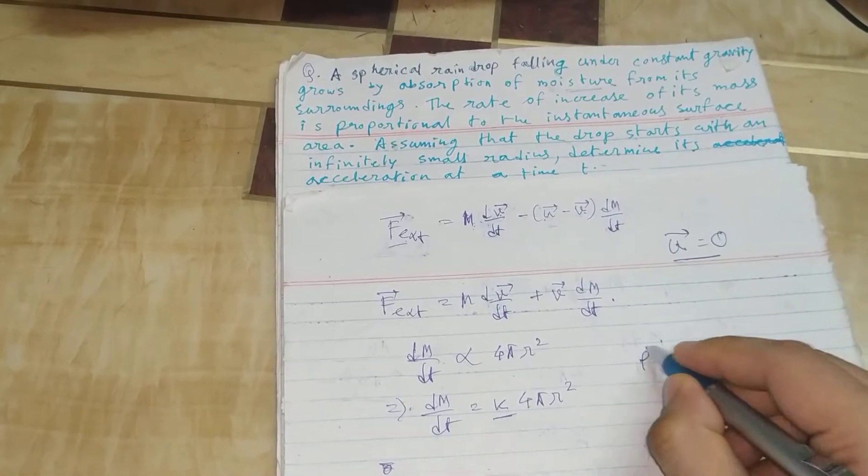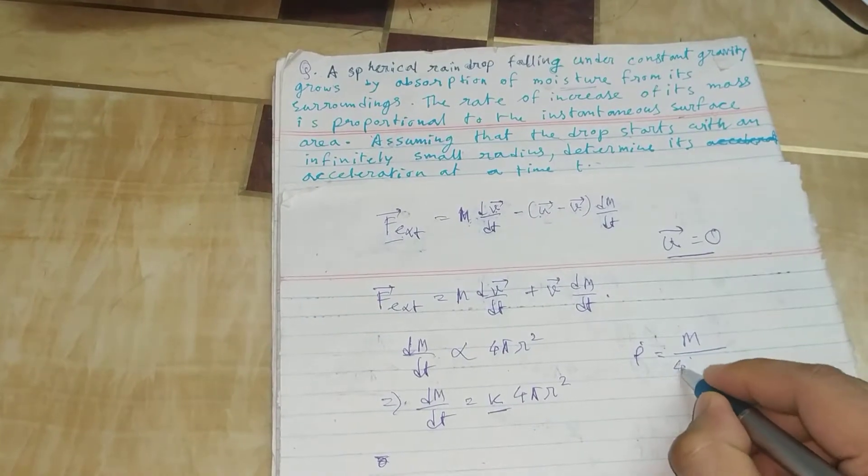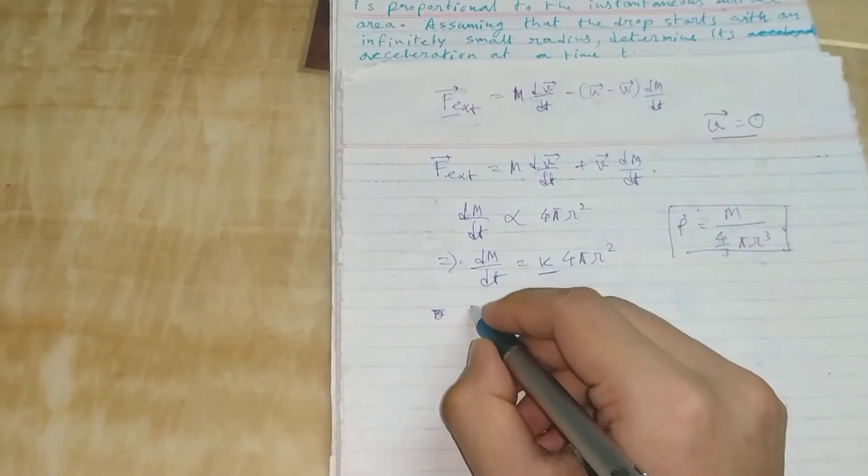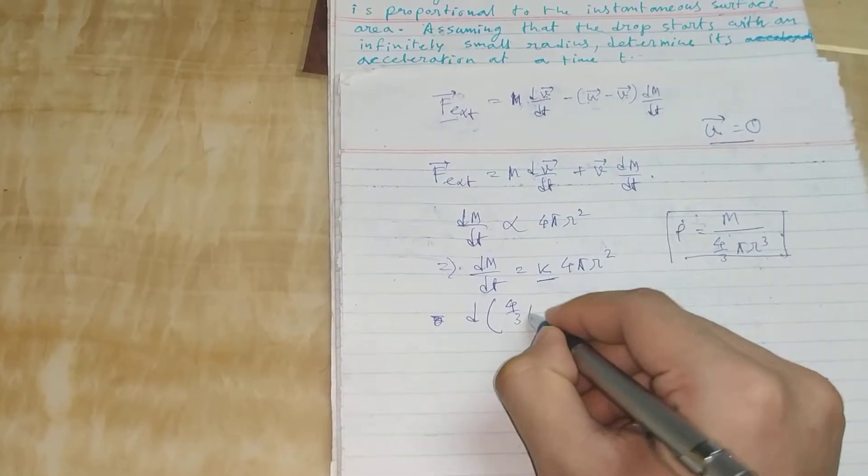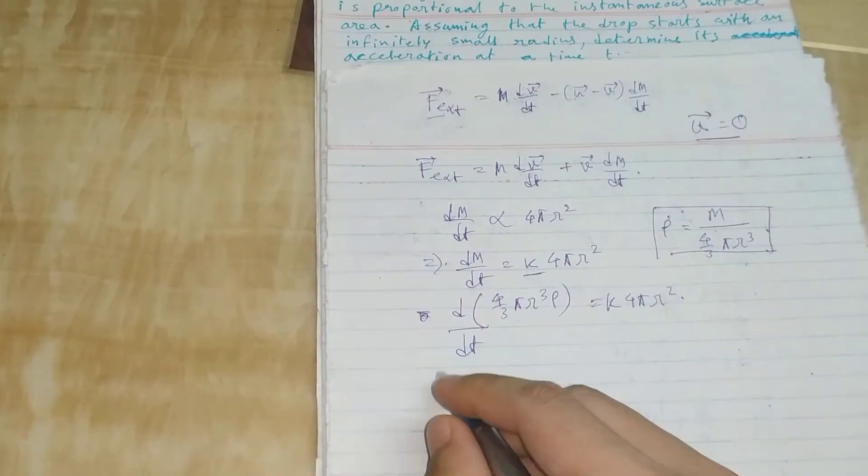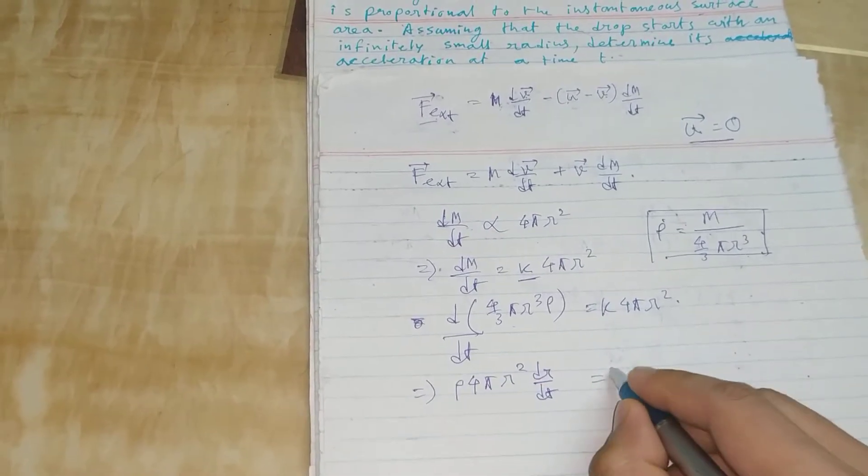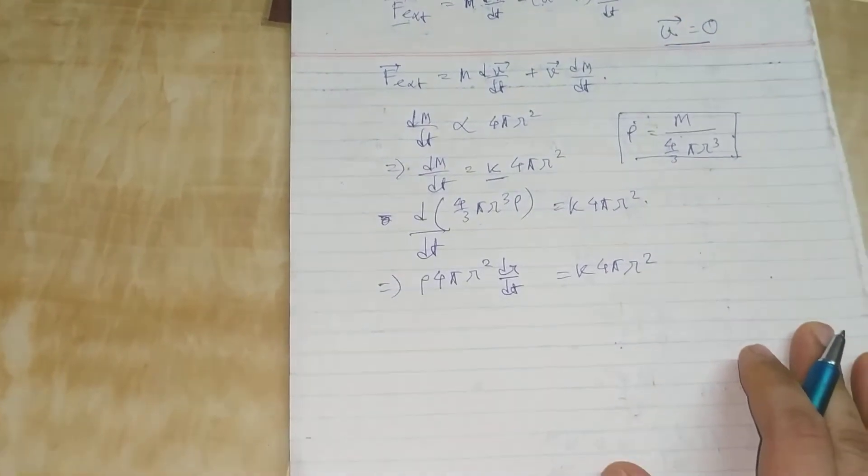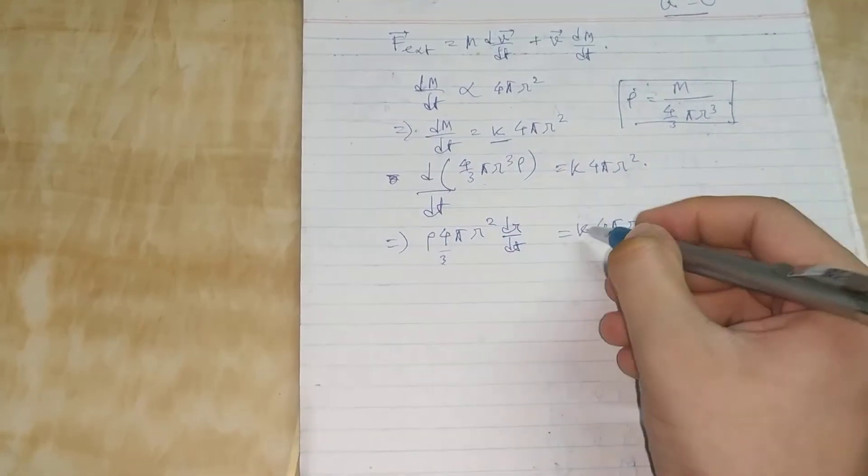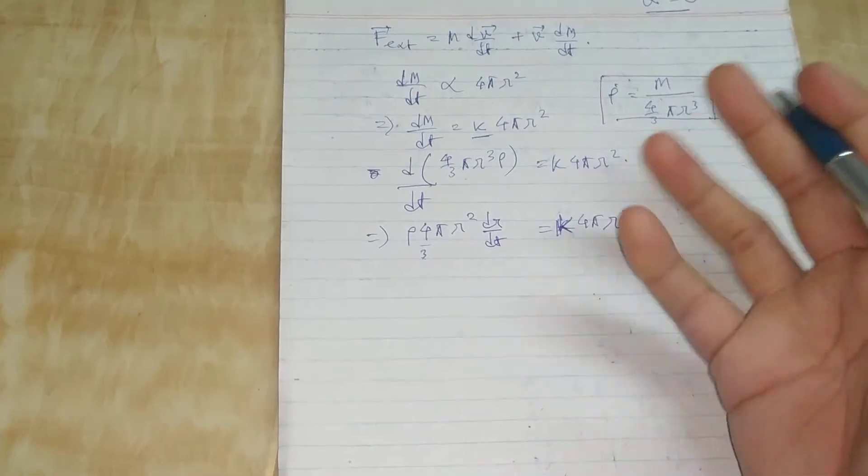If ρ is the density of the raindrop, which is mass divided by volume, we can write from this relation that ρ = m/(4πR³/3). From this we can manipulate to get dm/dt = K × 3ρ × 4πR² × dR/dt, which simplifies to dm/dt = KR dR/dt, where we've absorbed the constants into K.